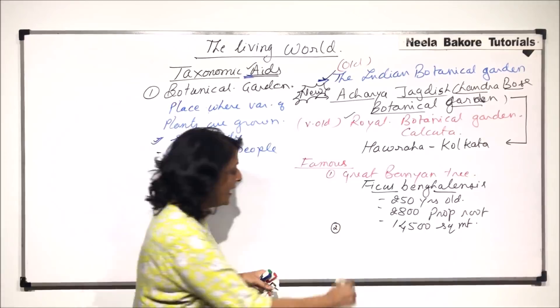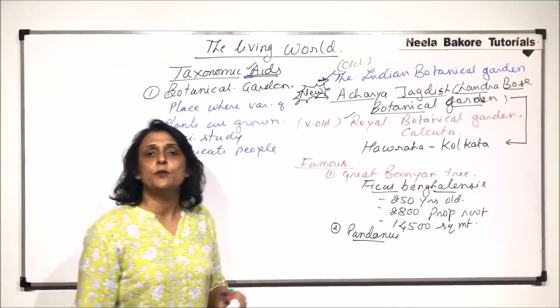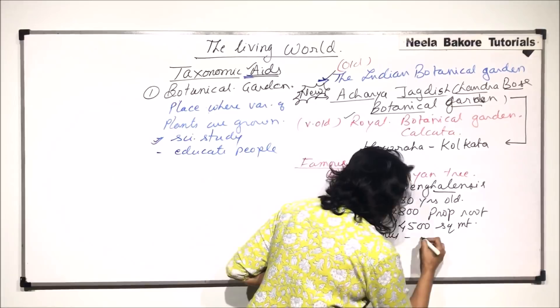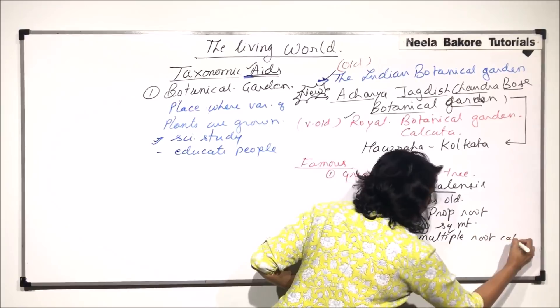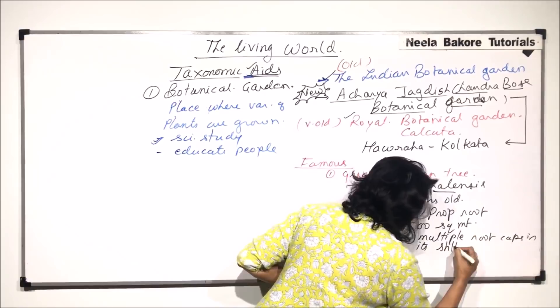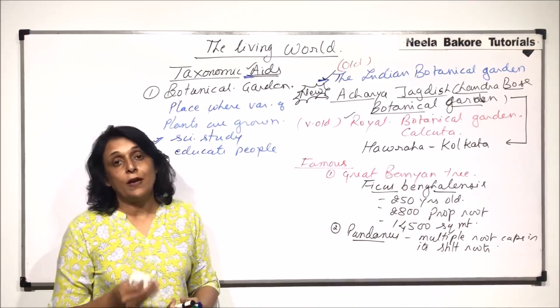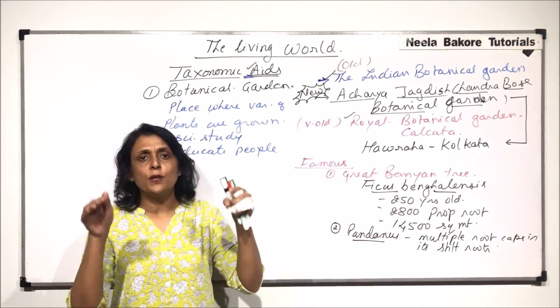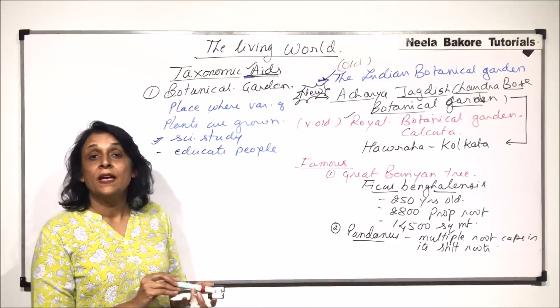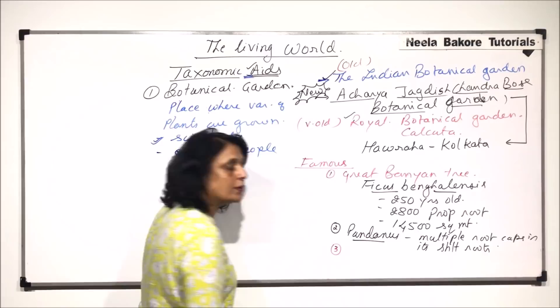The second important plant found here is Pandanus. Pandanus is famous because it has multiple root caps in its stilt roots. Normally in morphology we study that every root has one root cap. But in Pandanus, the stilt roots — which arise from the lower part of the stem and provide extra mechanical strength to the plant — have multiple root caps.